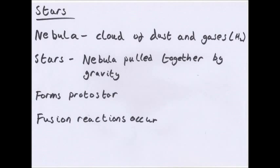Stars are made from a nebula — a cloud of dust and gases, mainly hydrogen. Stars are formed when the nebula is pulled together by gravity. As the contracting cloud gets more dense it heats up, begins to glow, and eventually forms a protostar. The temperatures and pressures in the centre of the protostar become high enough to force hydrogen nuclei to fuse together to form helium. This is called nuclear fusion, and it's what makes stars give out energy.